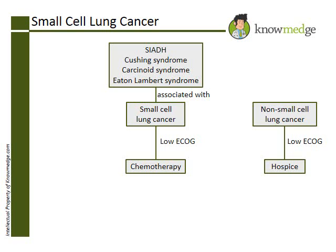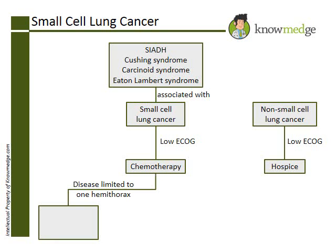Chemotherapy can help the patient improve his overall function. If the patient had disease limited to the one hemithorax, then choice E, chemotherapy and radiation therapy to the lungs and brain, would be the correct answer.